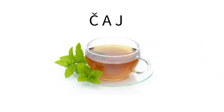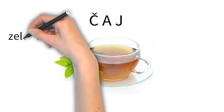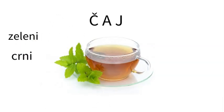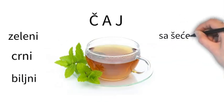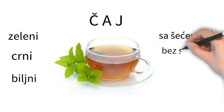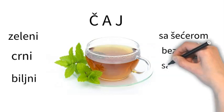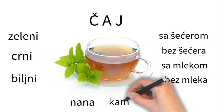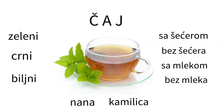Čaj means tea. Tea can be zeleni čaj, green tea; crni čaj, black tea; and biljni čaj, herbal tea. It can also be with sugar, sa šećerom, or without sugar, bez šećera, with milk, sa mlejkom, or without milk, bez mlejkom. Serbian people mostly drink herbal teas like nana, kamilica, or various fruit teas. There will be a wide variety of juices to order, so let's remember the names of the fruits first.